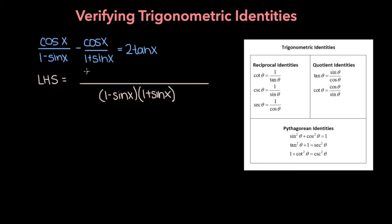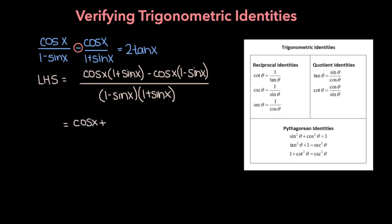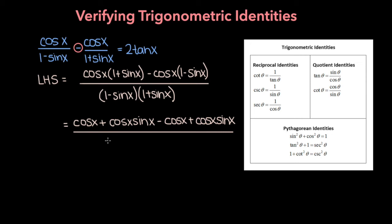The numerator then would be cosine x times 1 plus sine x minus cosine x times 1 minus sine x. Now let's expand the numerator: we get cosine x plus cosine x times sine x, then minus cosine x and then minus cosine x times minus sine x, which is cosine x sine x. And if we expand the denominator out, we get 1 plus sine x minus sine x minus sine squared x.